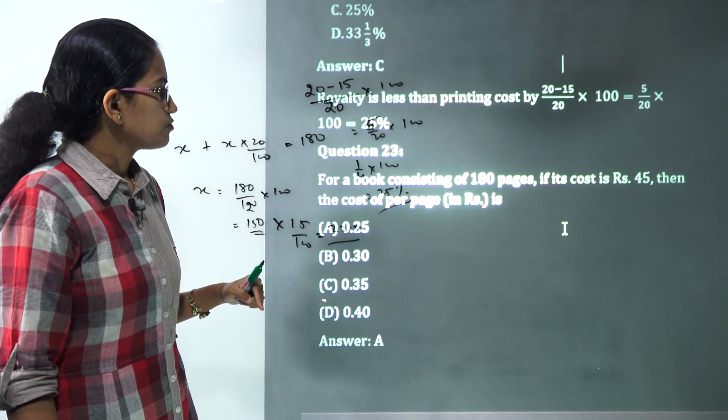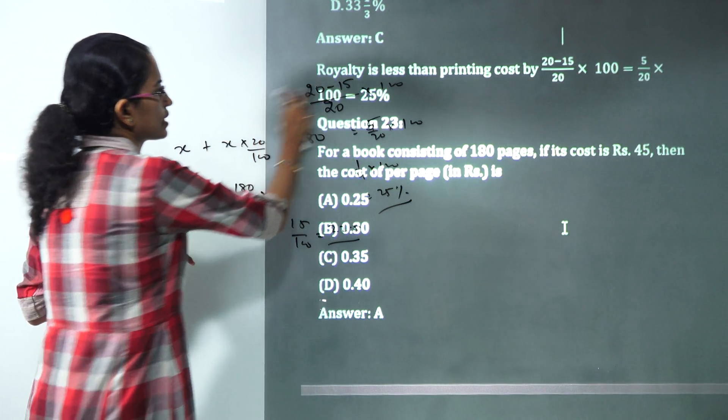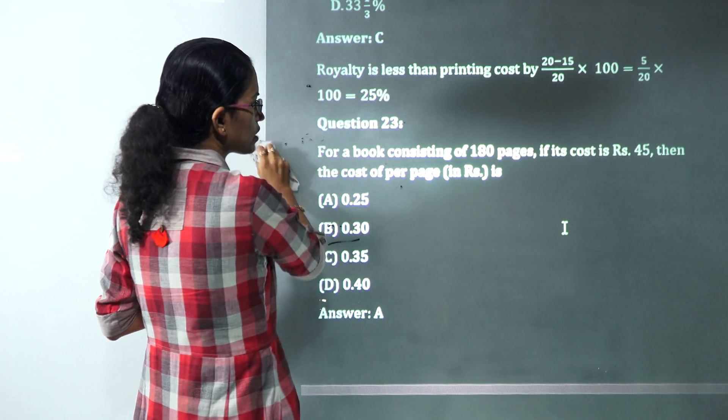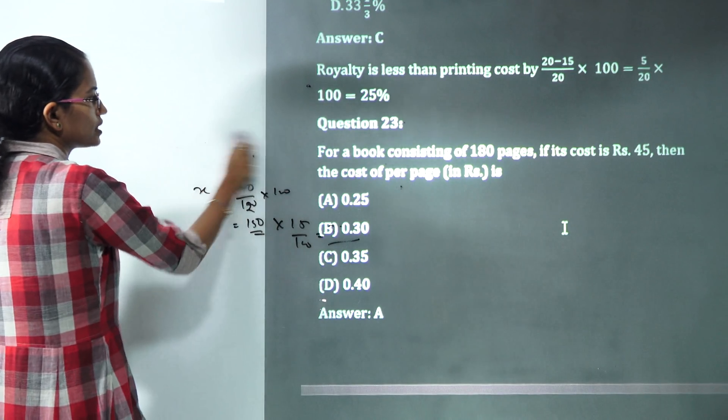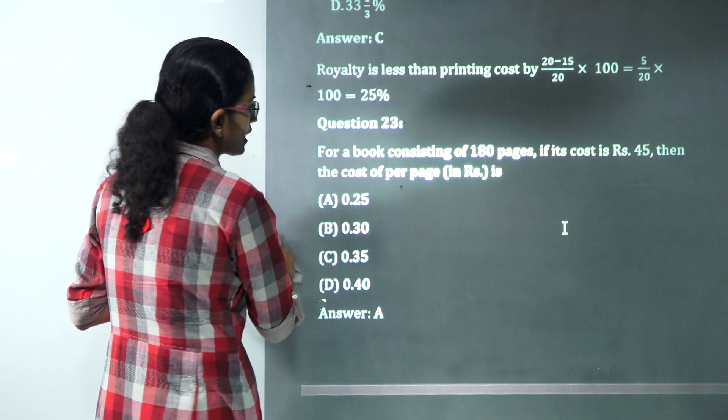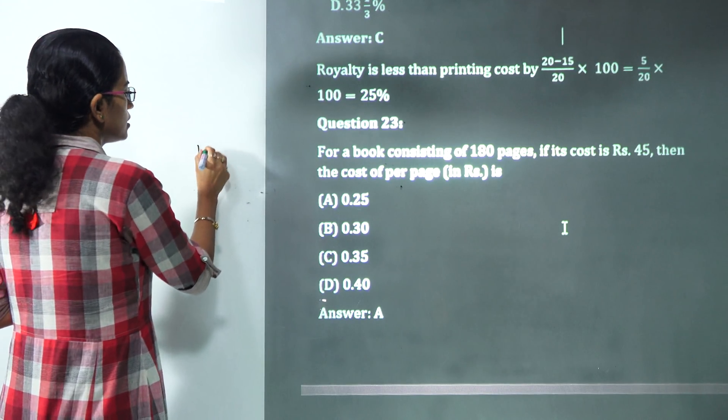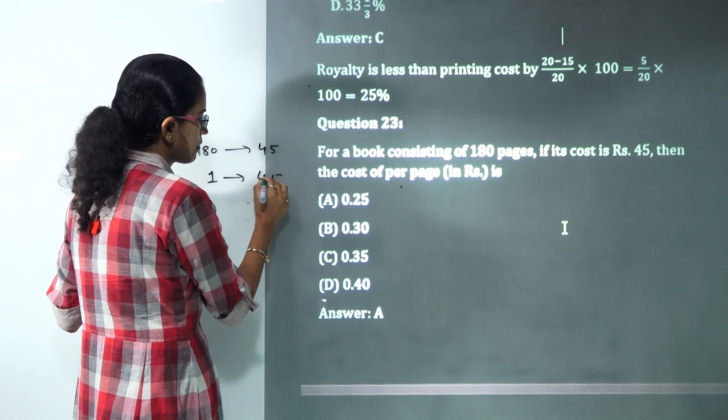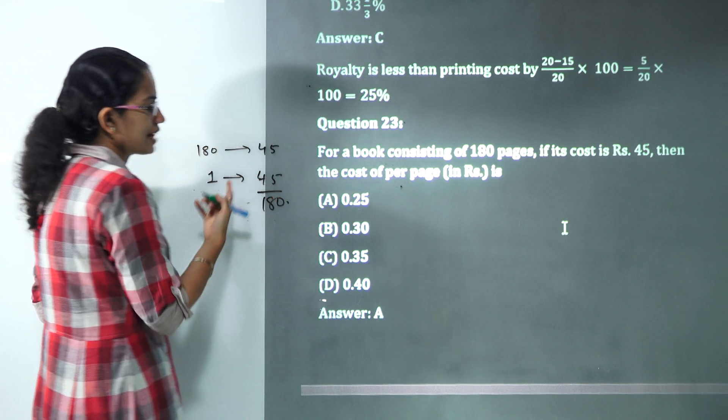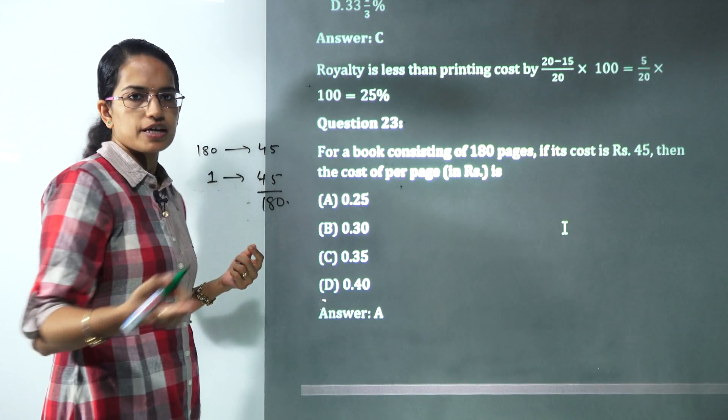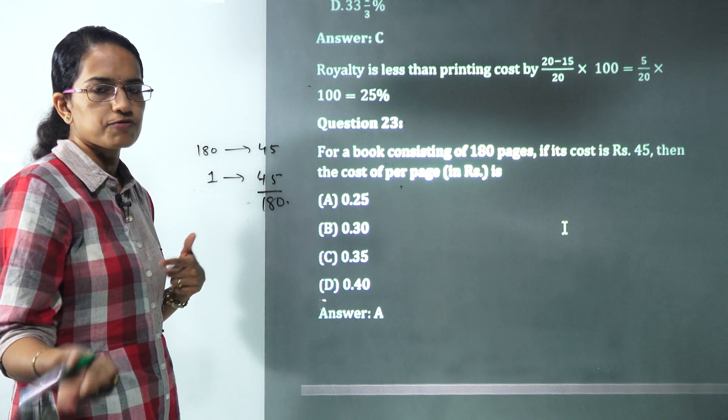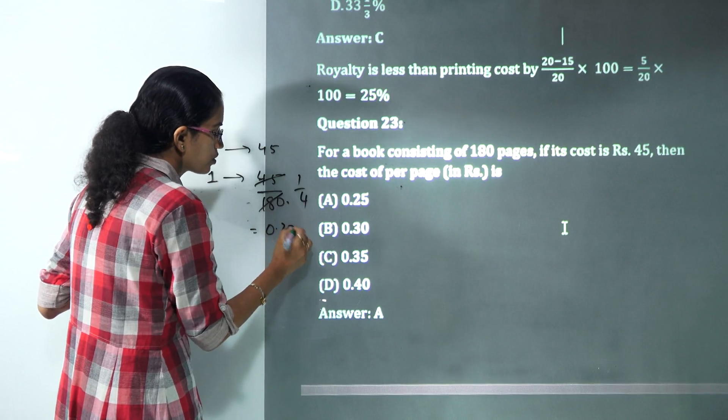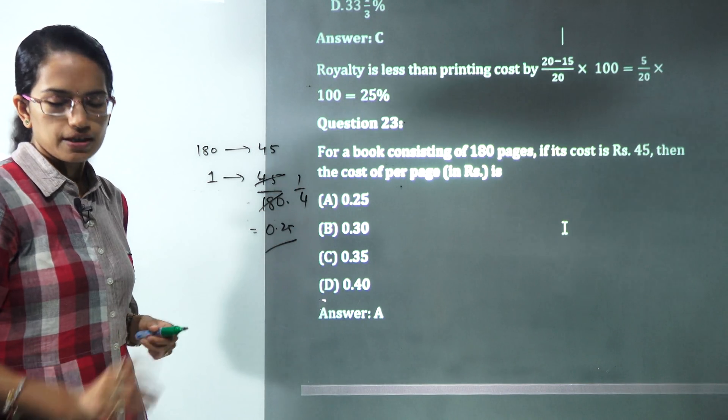The next question says for a book. This question has nothing to do with the pie graph that's given. For a book of 180 pages if the cost is 45 rupees, what is the cost per page? For 180 pages the cost is 45 rupees. Simple unitary method that we apply. For one page the cost would be 45 divided by 180 and that's basically the cost per page. It's basically one fourth. I can say it's one fourth or 0.25. 0.25 would be the correct answer.